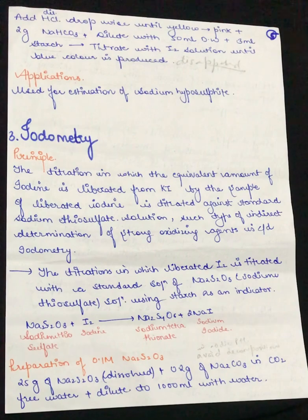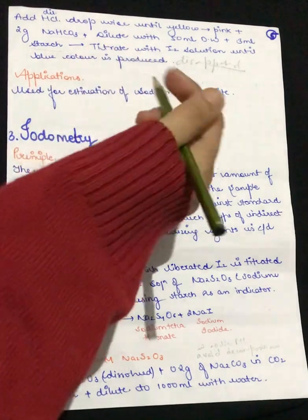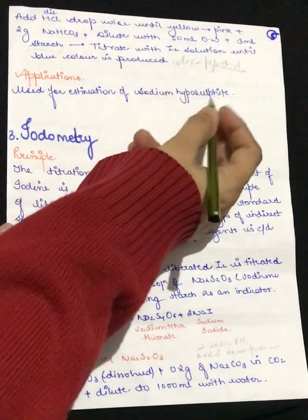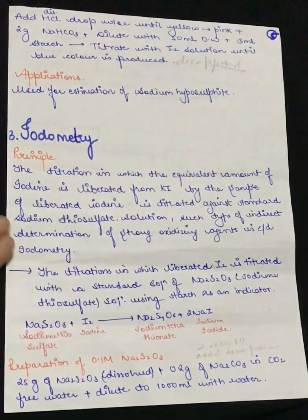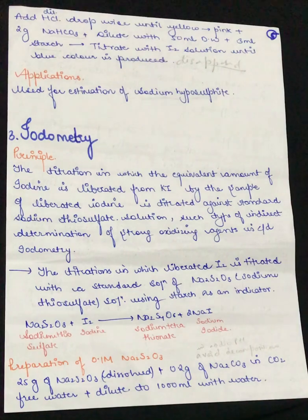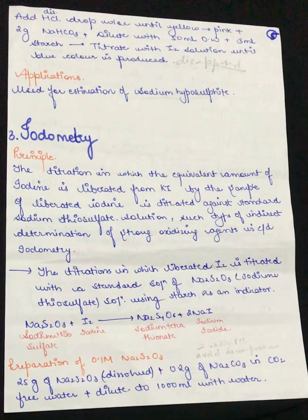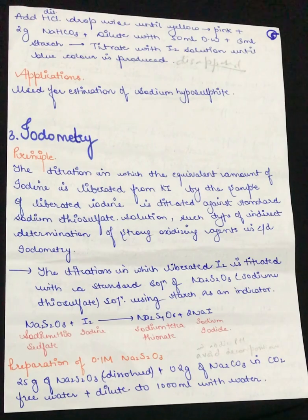The applications include that iodimetry is used for the estimation of sodium hyposulphite. These are the principle, procedure, and application of iodimetry, and in the next video we will be studying about iodometry.